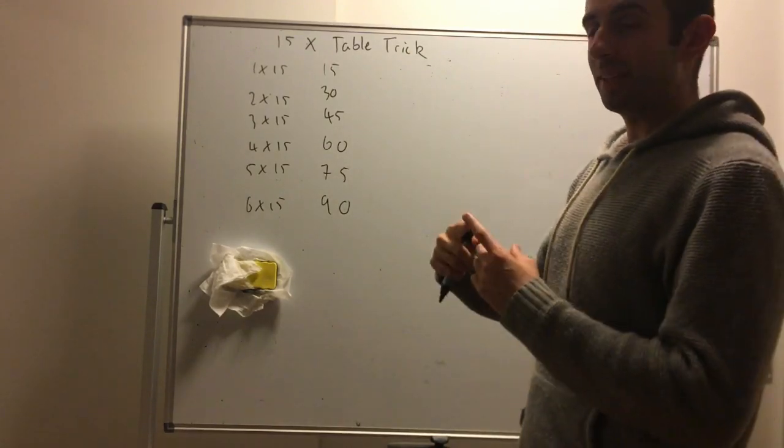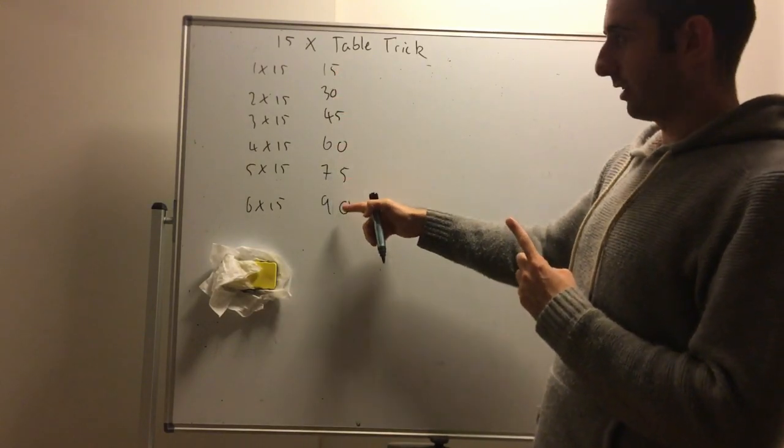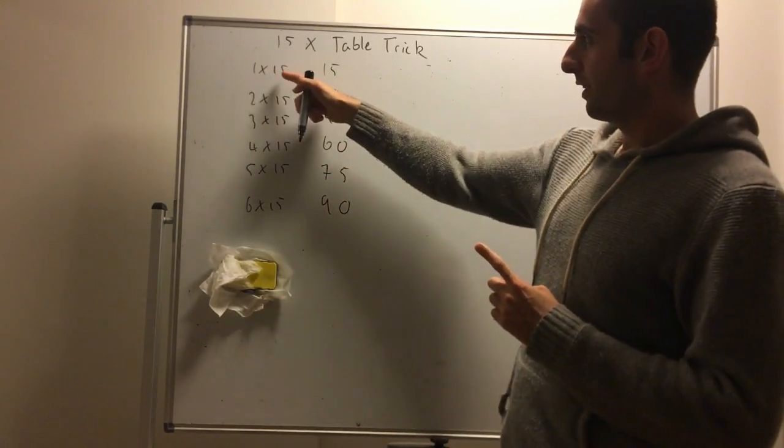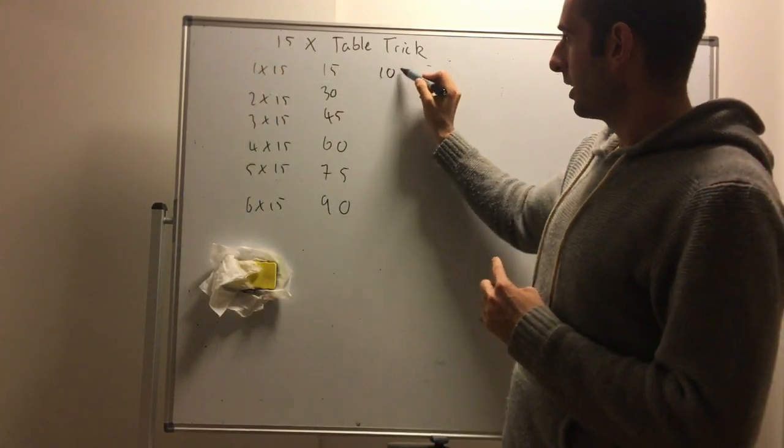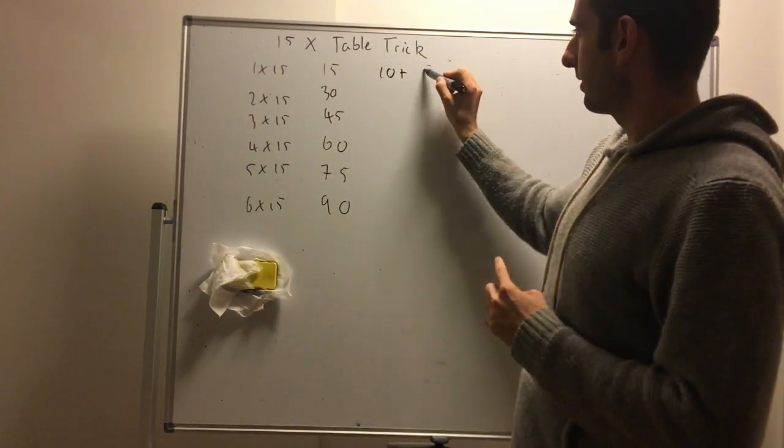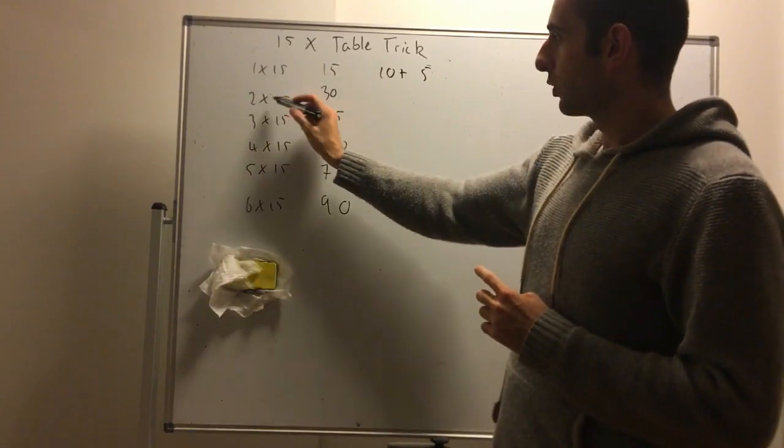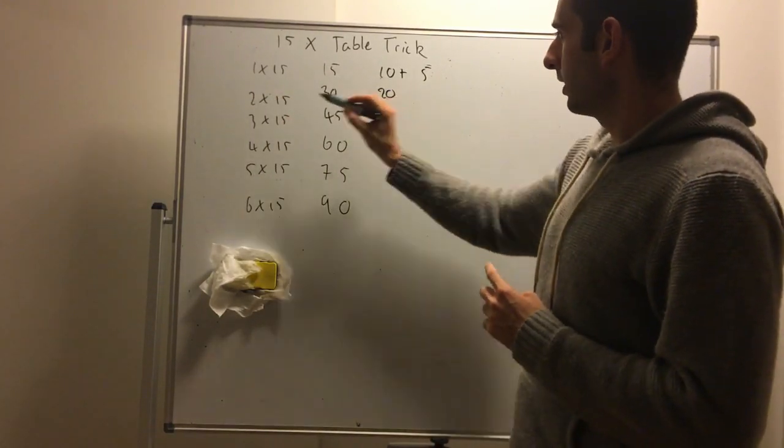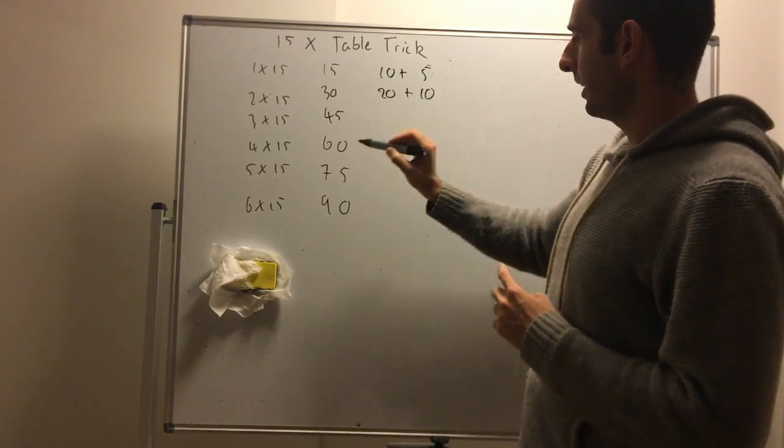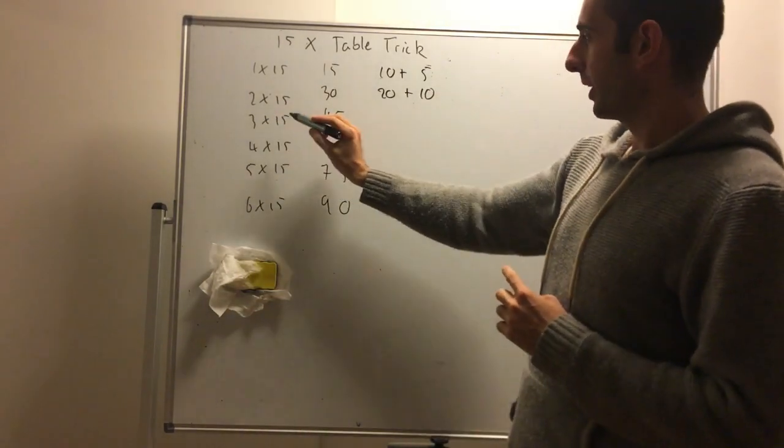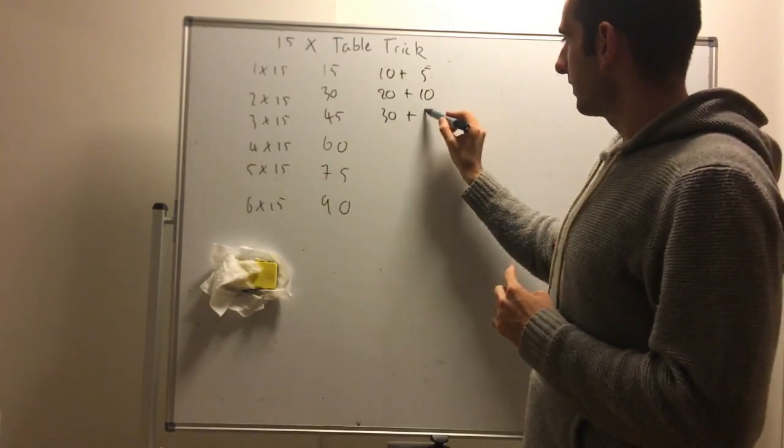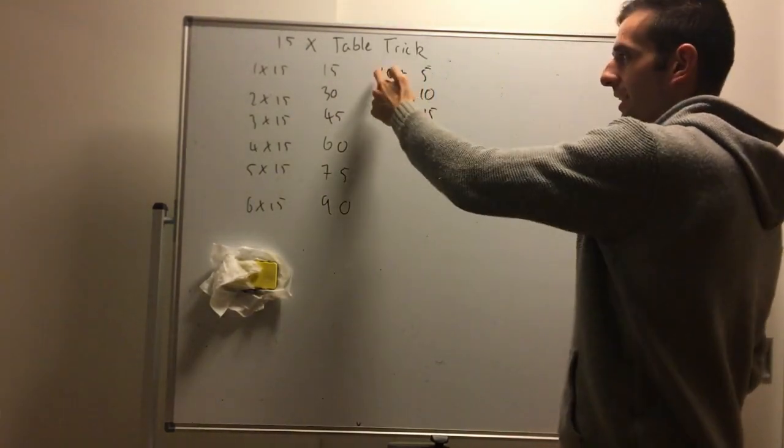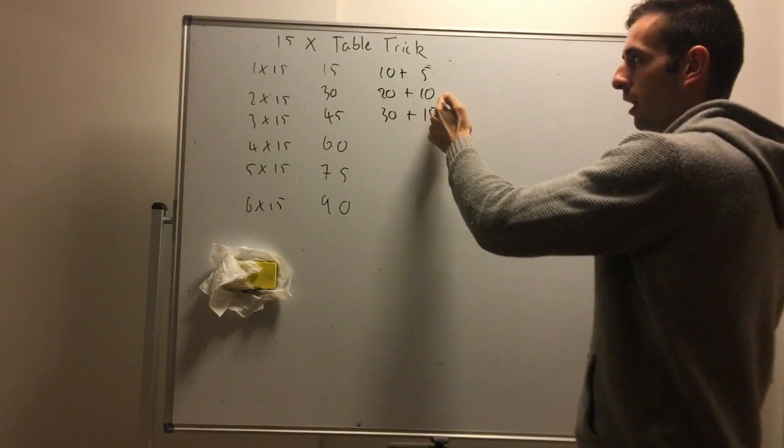So the key to see the pattern is to break up how these numbers are gotten. So to get 15 from times 1, it's 1 times 10 and then it's 1 times 5. Here it's 2 times 10 which is 20 and 2 times 5 is 10. And it's 3 times 10 which is 30 plus 3 times 5 which is 15. So you can see these are increasing by 10, these are increasing by 5.